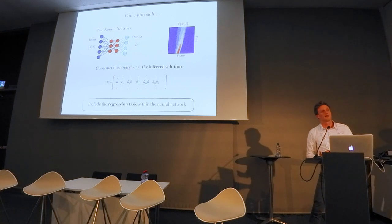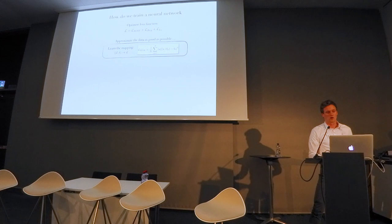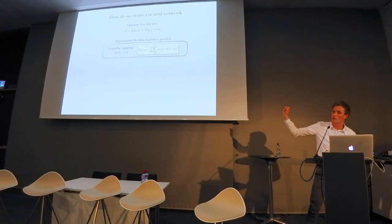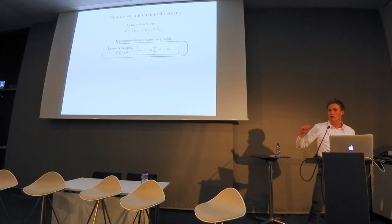If we train our neural network, we define the loss function. The loss function contains three terms. The first one is a mean square error, where we try to learn the mapping, so we learn the mapping x,t to u.